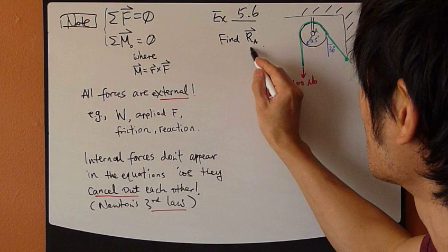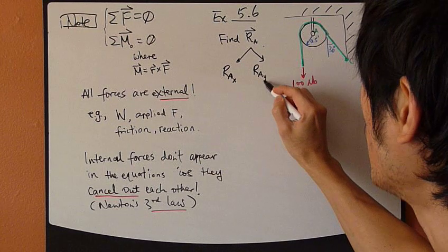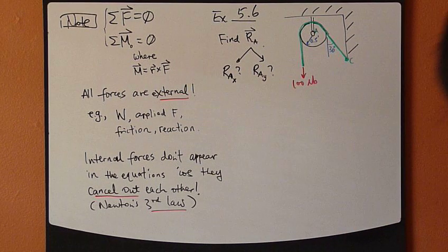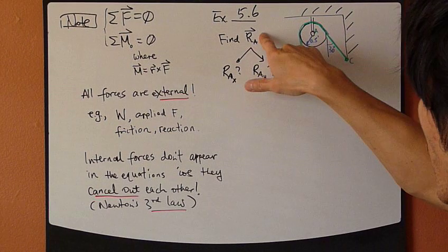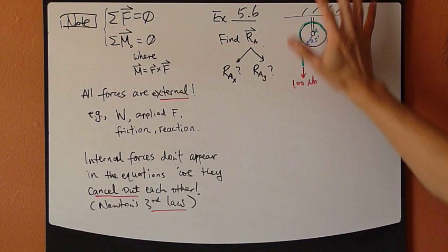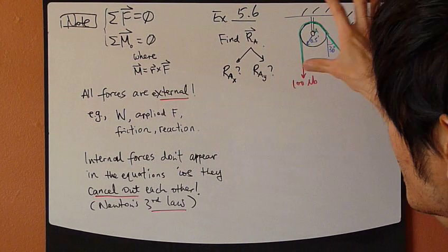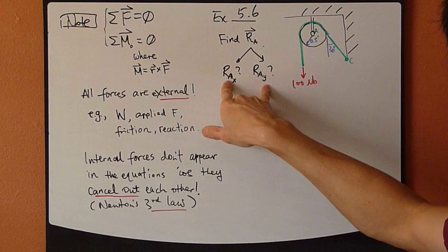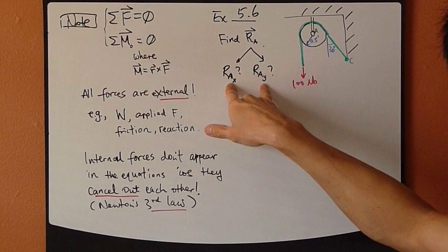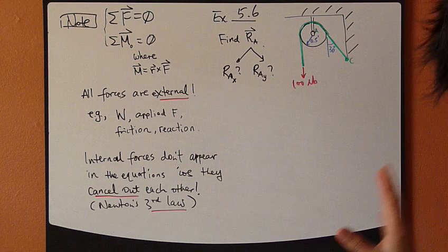You have to find the reaction forces at A, reaction force vector at A. This is a 2D problem, so this means that you're actually asked to find reaction force X component and reaction force Y component. So they are actually two unknowns. Also, if you look at this whole free body diagram, what do you draw just so that the free body diagram that you draw will enable you to find these two unknowns?